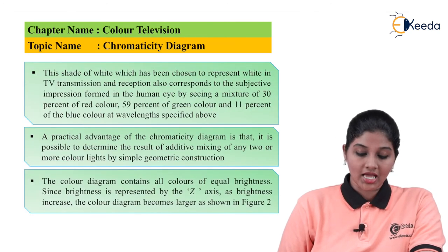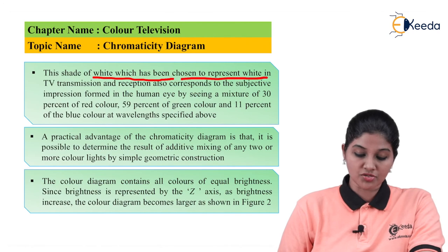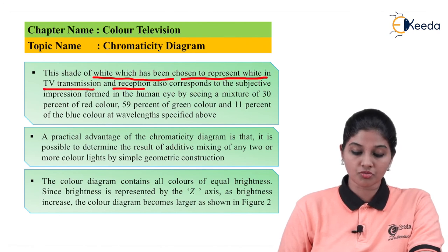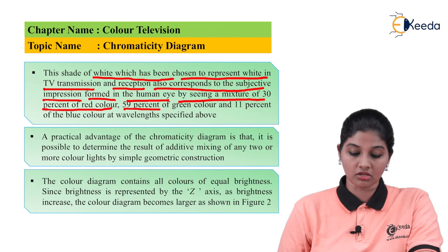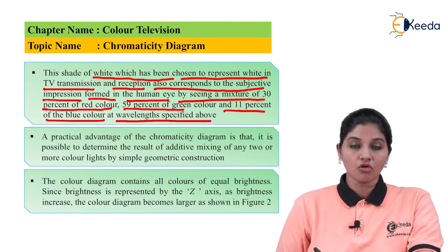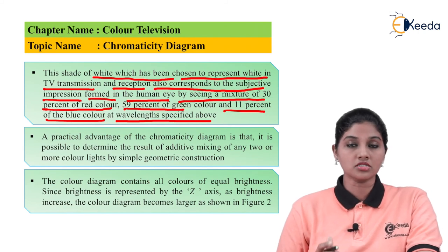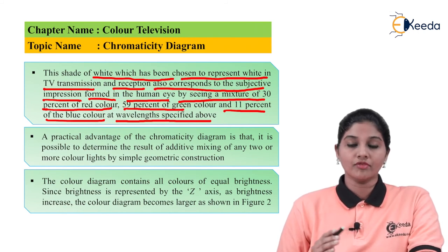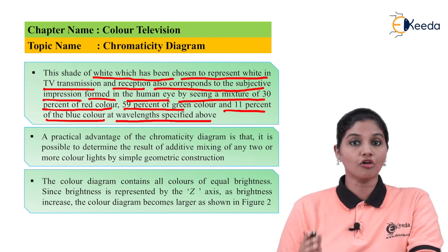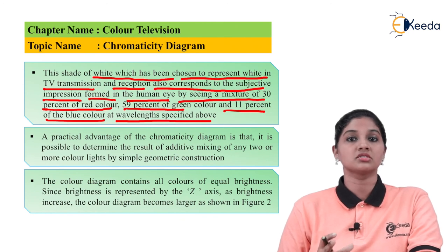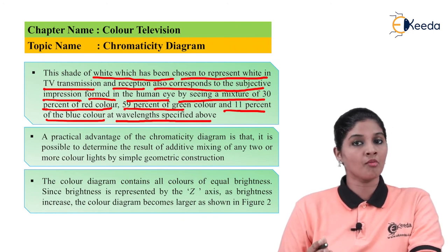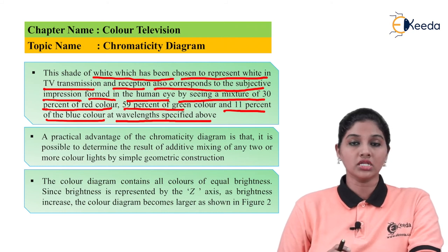The shade of white chosen to represent white in TV transmission and reception corresponds to the subjective impression formed in the human eye by seeing a picture with 30% red, 59% green, and 11% blue at the specified wavelengths. When the human eye receives this color combination, it is perceived as white, and this same combination is used as TV white color.